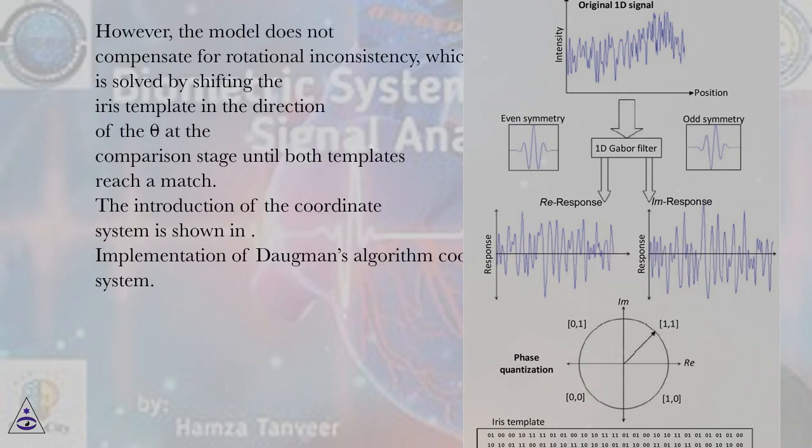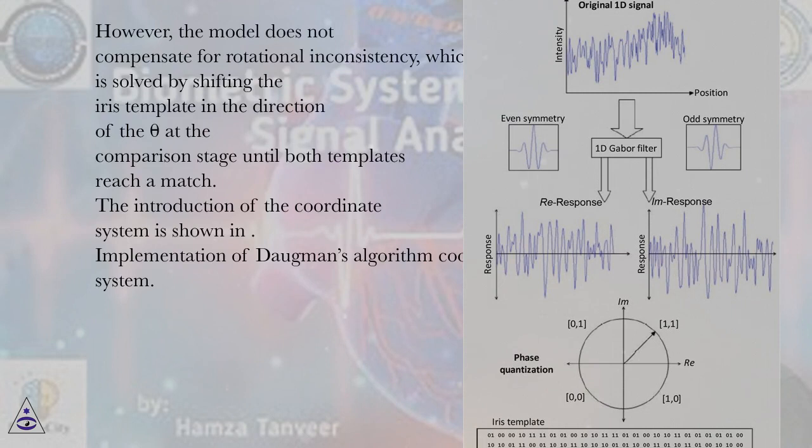However, the model does not compensate for rotational inconsistency, which is solved by shifting the iris template in the direction of theta at the comparison stage until both templates reach a match.